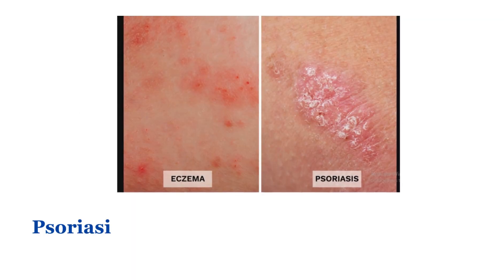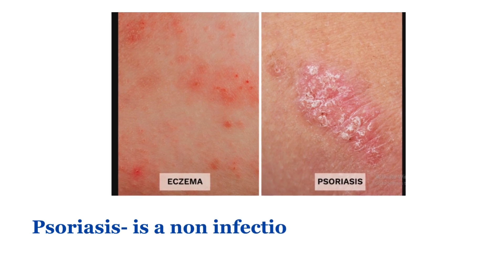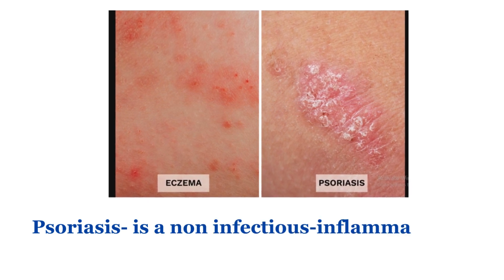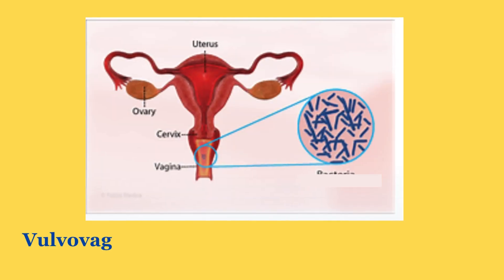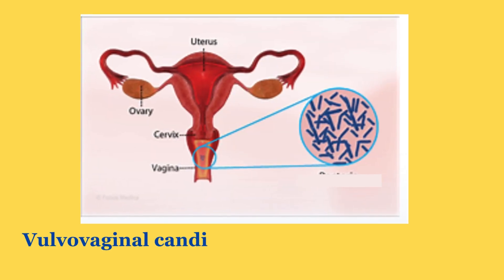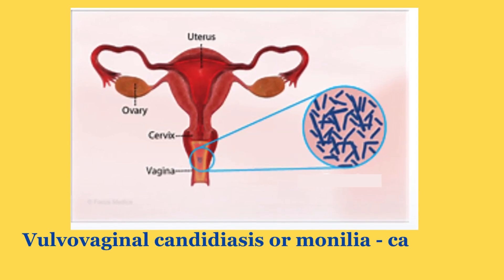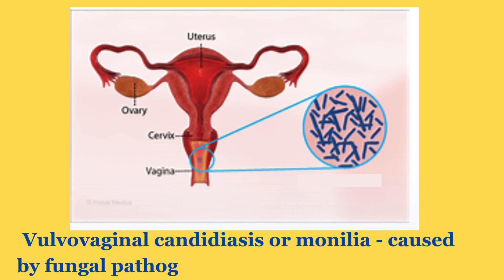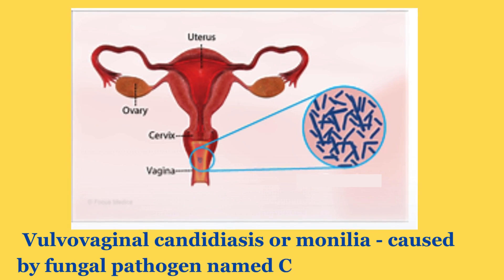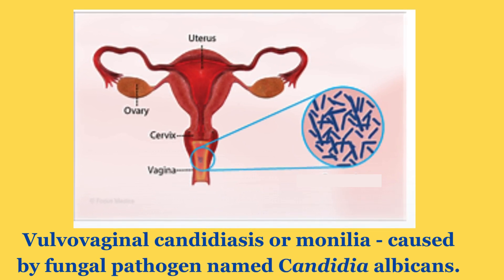Psoriasis is a non-infectious inflammatory disease. Vulvovaginal candidiasis, or monilia, is caused by a fungal pathogen named Candida albicans.